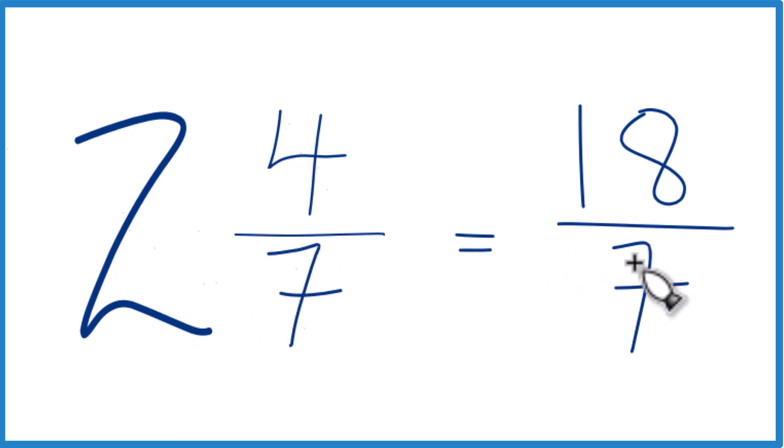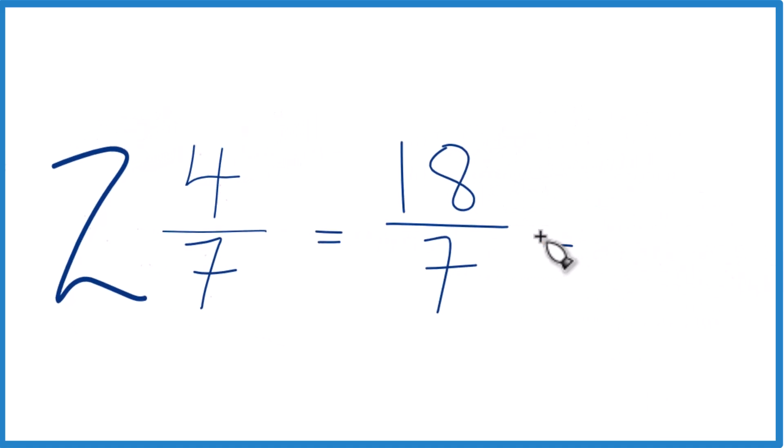If we wanted to go back the other way, we could say that 7 goes into 18 two times, because 2 times 7 is 14, and we'd have 4 left over. Just bring the 7 across, and that's what we started with, 2 and 4 sevenths, so we know we did this correctly.